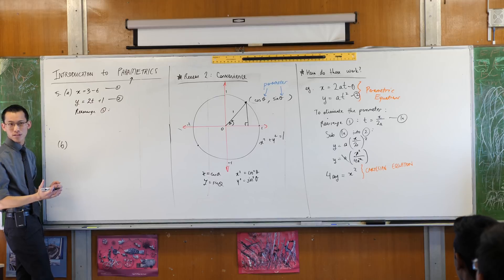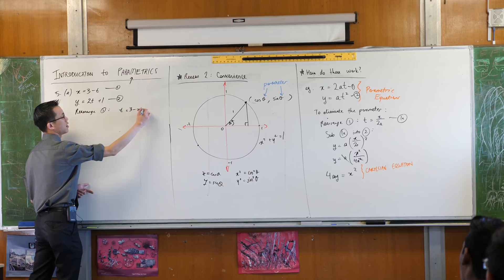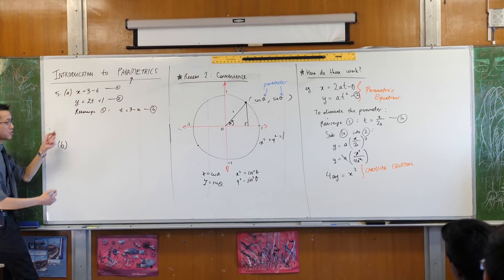Yeah, I think I'll add t to both sides, I'll subtract x from both sides. So that gives me t = 3 - x. Is that alright? And this can go straight into equation 2.